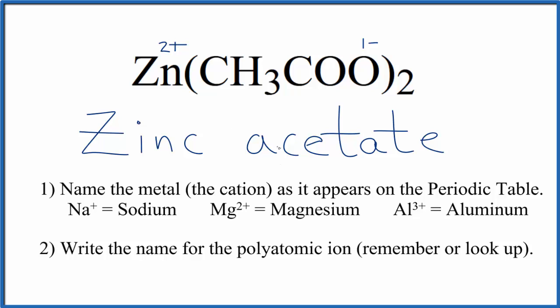If you were given this name and asked to write the formula, you'd need to know that zinc forms 2+ ions and that the acetate ion here is CH3COO 1-. So when you write the formula, since this is 1-, you need two of them. So you have 2- here, 2+, charges balance out, and you have a net charge of 0.